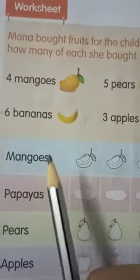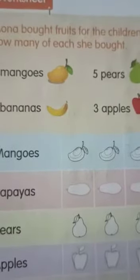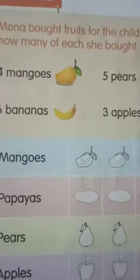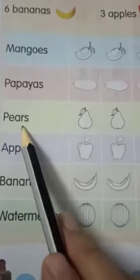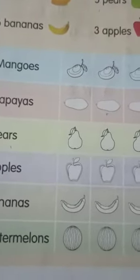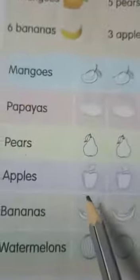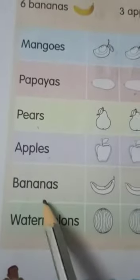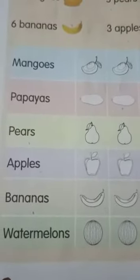Now, in this worksheet, you have to color the pictures to show how many of each fruit Mona bought. Okay. 4 mangoes. You have to color 4 mangoes here. And papayas. How many papayas she bought? 2 papayas. So, you have to color 2 papayas. Pears. 5 pears she bought. You have to color 5 pears. Apples. How many apples she bought? 3 apples. You have to color 3 apples. Bananas. How many? 6. You have to color 6 bananas. Watermelon. Only 1 she bought. So, color only 1 watermelon.